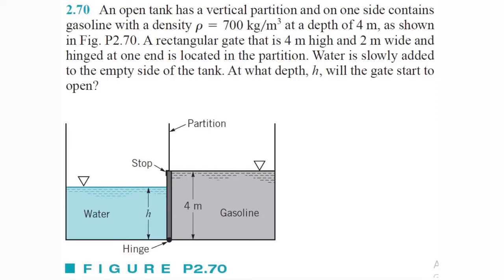Alright, so what's going on? We got another hydrostatic problem here. It reads: an open tank has a vertical partition, and on one side contains gasoline with a density of 700 kilograms per meter cubed at a depth of 4 meters. A rectangular gate that is 4 meters high and 2 meters wide and hinged at one end is located in the partition. Water is slowly added to the empty side of the tank, and at what depth H will the gate start to open? So let's go ahead and get started.